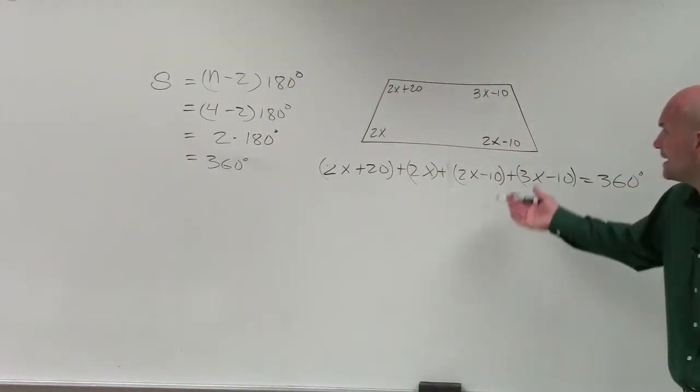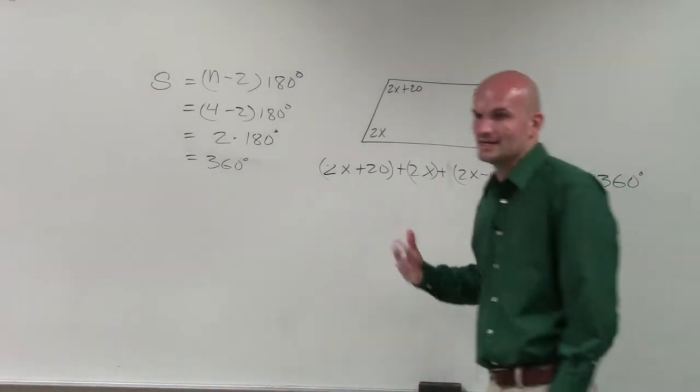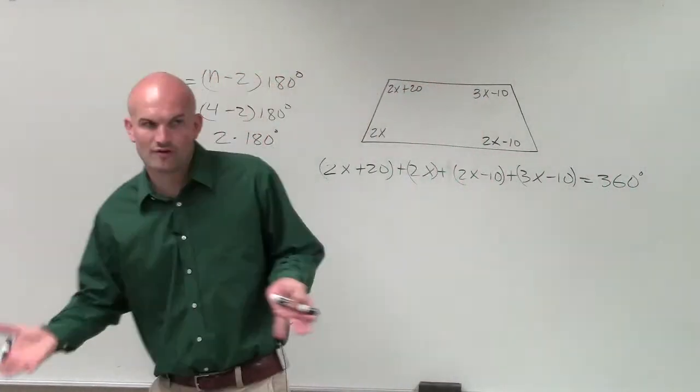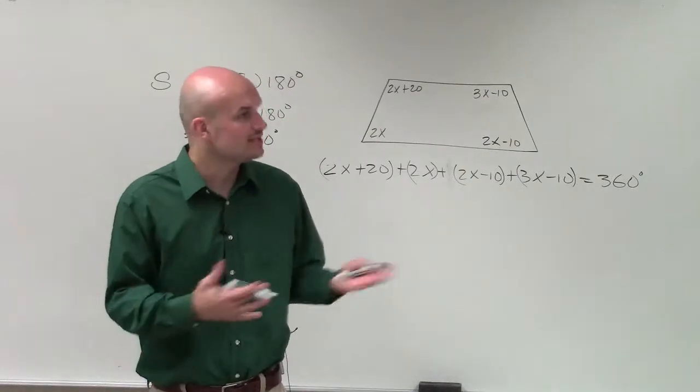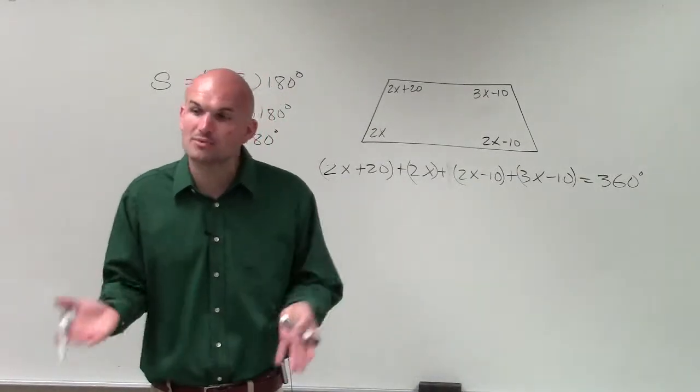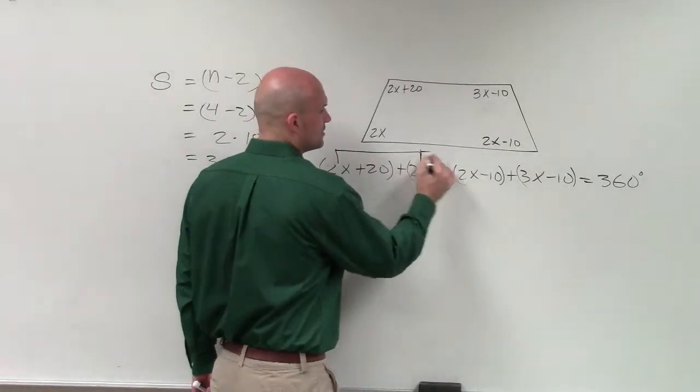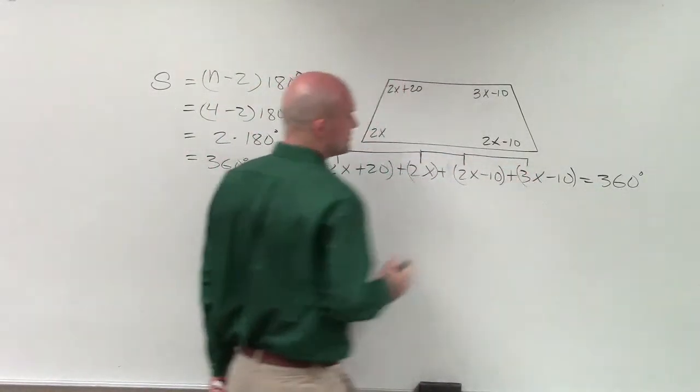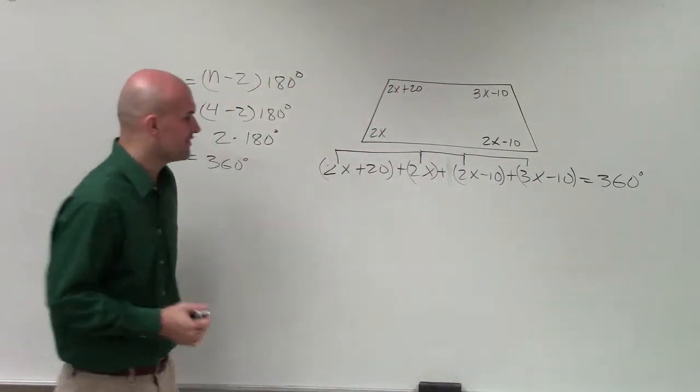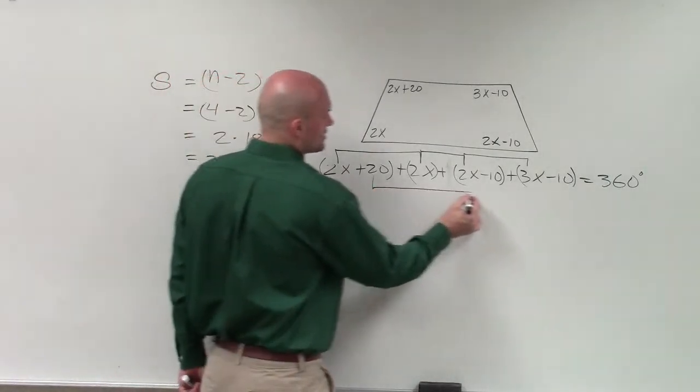So now, remember, when we're combining like terms, I can only combine my variable factors with an x with the other variable factors with an x, and my numbers only with the numbers. So what I'm just going to simply do is connect all my numbers with variable factors, and then I'll connect my numbers.